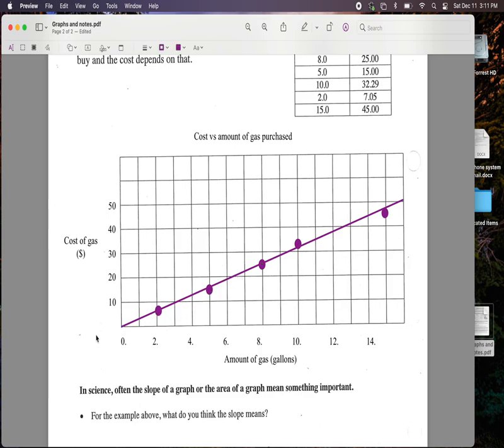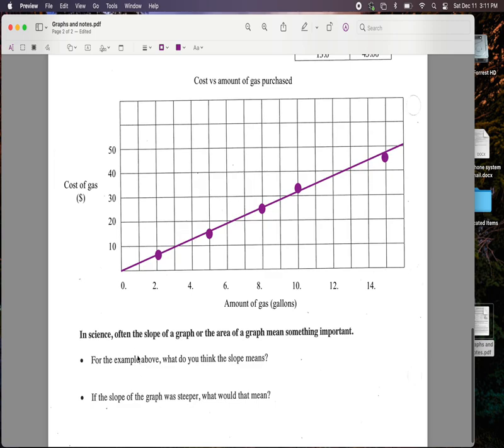And the slope of this means something. So a lot of times the area and the slope of a graph in science means something. This slope tells us the cost per gallon of gas. It's a rate. Something per something else. So if I look at the slope, it looks to me like it's a little bit, if I go 10 gallons here, it's a little above $30. So it's about $3.10 or $3.20 a gallon.